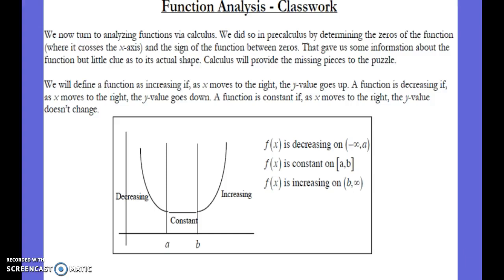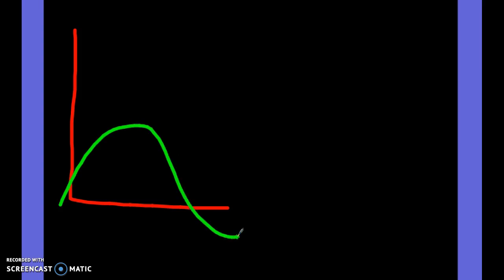We just got done with Rolle's Theorem and the Mean Value Theorem. Quick recap: with Rolle's Theorem, you have a function and you pick two points that have the same y-value. If you take the derivative of the function — shown here in green — you'll find one point in between where the slope is also zero.